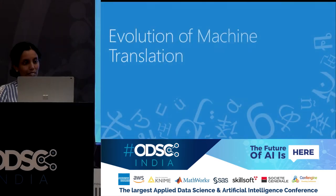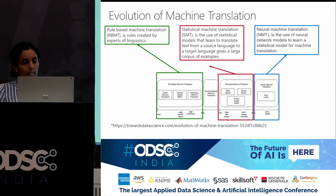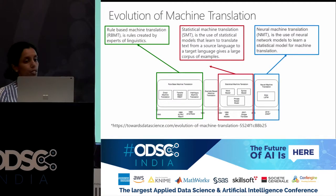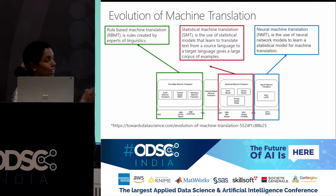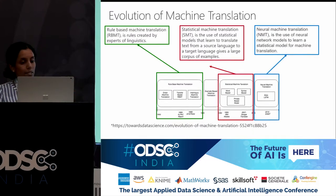Let's quickly look at the evolution of machine translation. The first approach was rule-based machine translation, known as RBMT, where expert linguists who understood languages came up with a bunch of rules for how to translate from one language to another. This is cumbersome and takes a lot of work and effort to have linguists and language experts tell you how to translate.